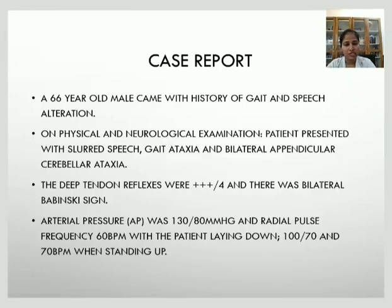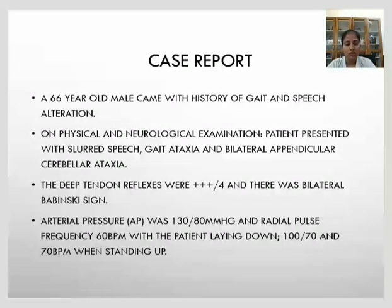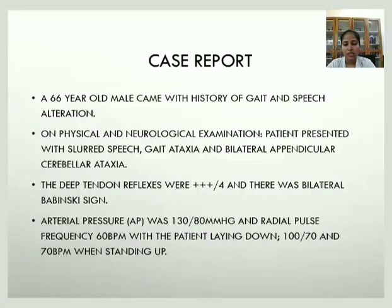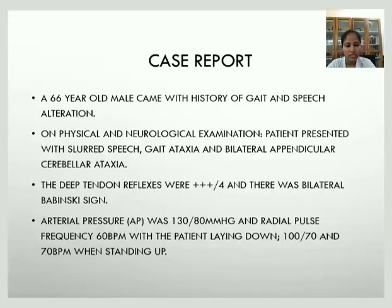On physical and neurological examination, the findings were as follows: the patient had slurred speech, gait ataxia, and bilateral appendicular cerebellar ataxia. Deep tendon reflexes were 3 out of 4, and there was bilateral Babinski sign positive. Arterial pressure was 130/80 mmHg and radial pulse was 60 beats per minute in the supine position, and BP was 100/70 and pulse 70 beats per minute in the standing position.